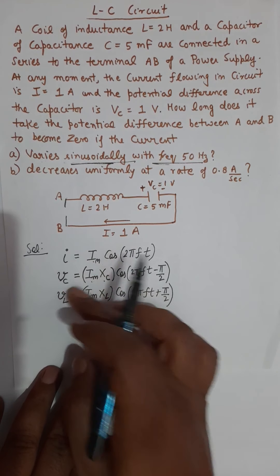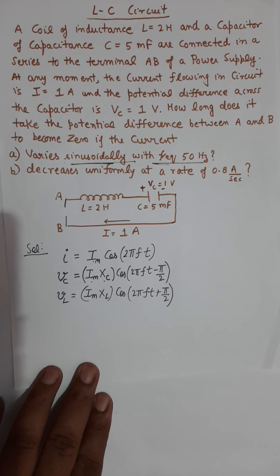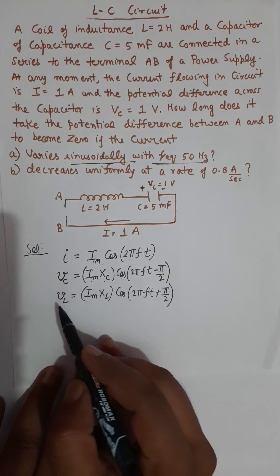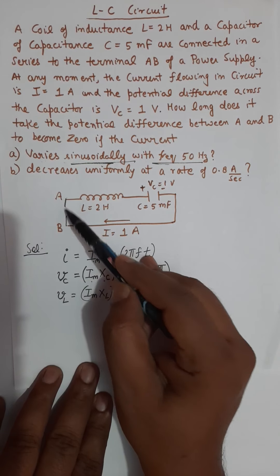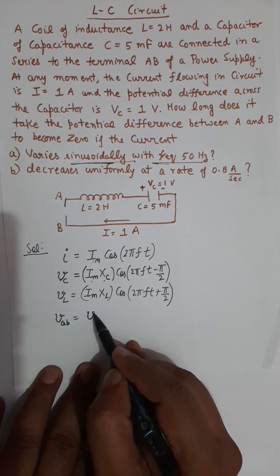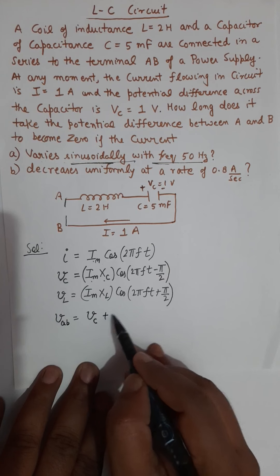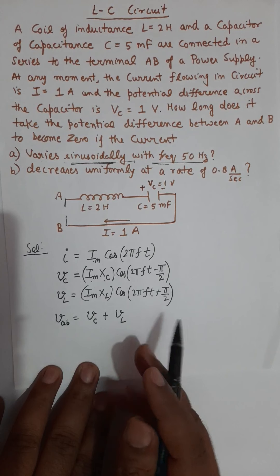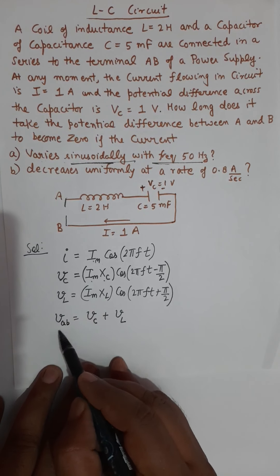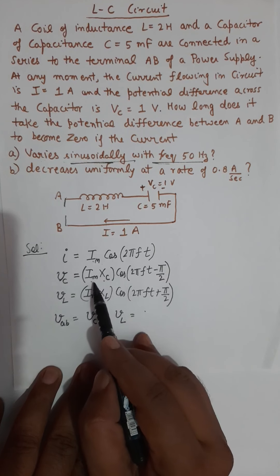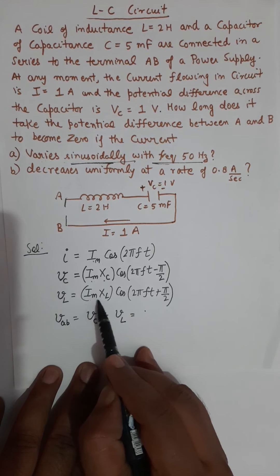All three equations are the values for instantaneous parameters. If we want the potential difference between A and B to be 0, remember the potential difference between A and B is nothing but the potential difference across the capacitor plus the potential difference across the inductor, and we want this value to be 0.